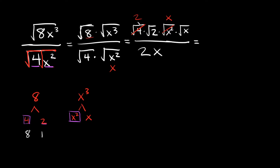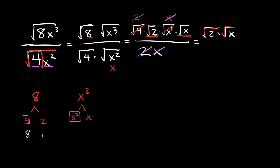In the numerator we have 2 times the square root of 2 times x times the square root of x. We can cancel the 2 in the numerator with the 2 in the denominator, and the x in the numerator with the x in the denominator. So we're left with just the square root of 2 times the square root of x. Since they're both under radicals, we can combine them under one radical: the square root of 2 times the square root of x equals the square root of 2x. That's the simplified answer.